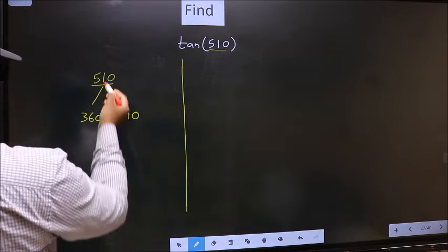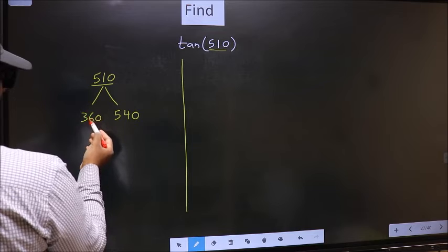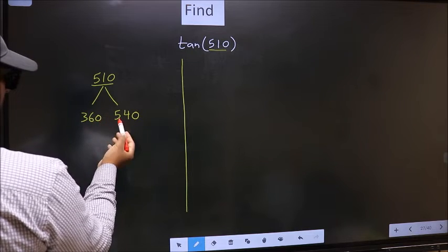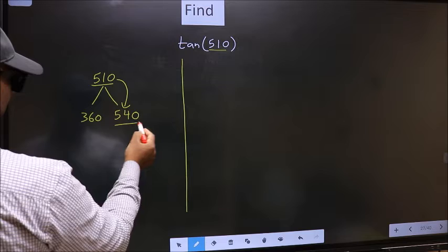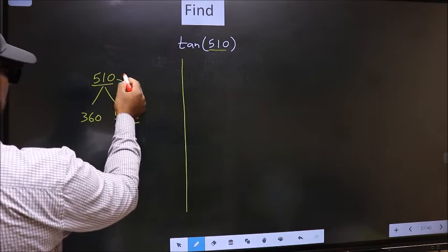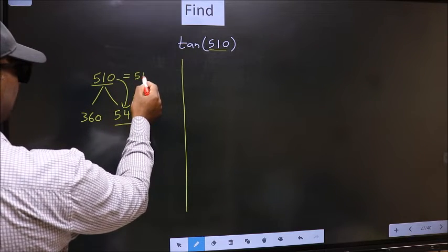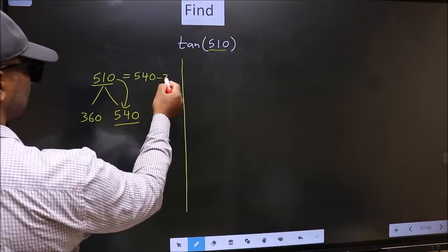Next, 510 is close to which number? This is close to 540. So in place of 510, now we should write 540 minus 30.